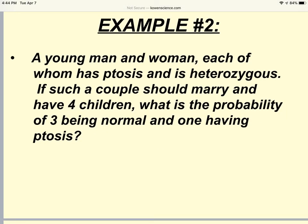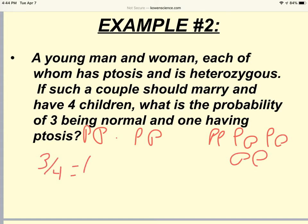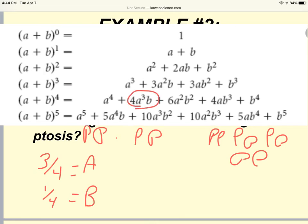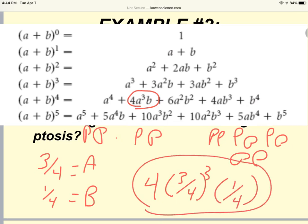Here we have another example. Each of the individuals is heterozygous. The couple wants to marry and have four children, the probability of three being normal and one having ptosis. We can use that same equation. Because they're heterozygous, big P little p, the F1 would be three-fourths being A, and one-fourth being B. We would go back into our chart. We would still use this expansion, because three children having the condition and one child not. We would multiply four times. In this case, A is three-fourths cubed. B is one-fourth, not cubed. Work this out, and we would have our answer.